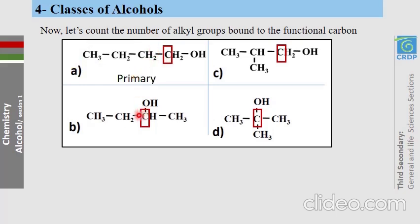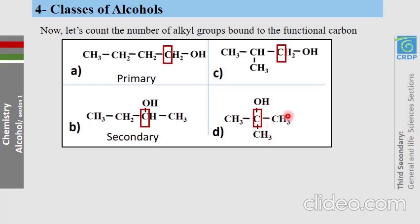In the next molecule, two alkyl groups are connected to the functional carbon, so it is a secondary alcohol. In another molecule, three alkyl groups are connected to the functional carbon, so we call it a tertiary alcohol.